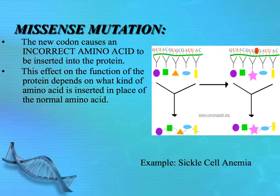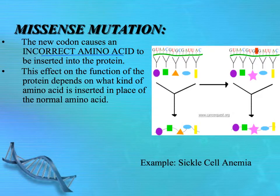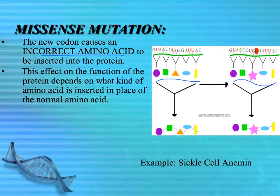When you have a point mutation, you are making a new codon. The codon is the group of three nucleotide bases that codes for a particular amino acid, and amino acids get connected together to make a protein. So if you change a codon — if you have one substitution, one new base that wasn't in the original — you get an incorrect amino acid. The effect on the protein depends on what kind of amino acid gets in there. This diagram uses shapes to show the protein: a circle, square, triangle, oval, and rectangle as the normal pattern, but with a substitution, a star replaces the triangle, giving a different amino acid.